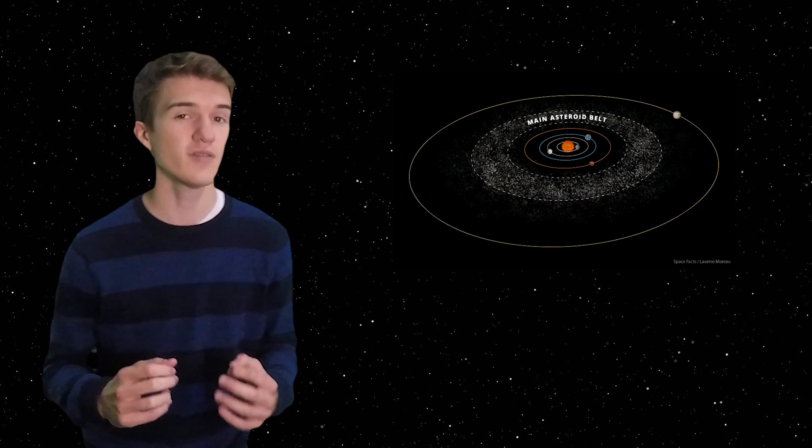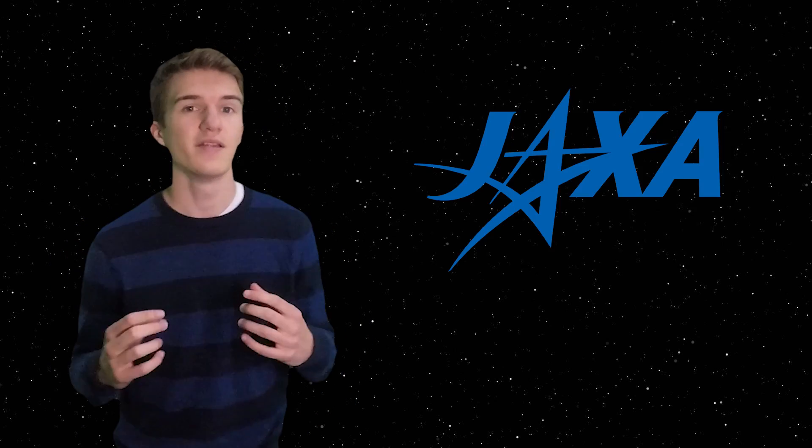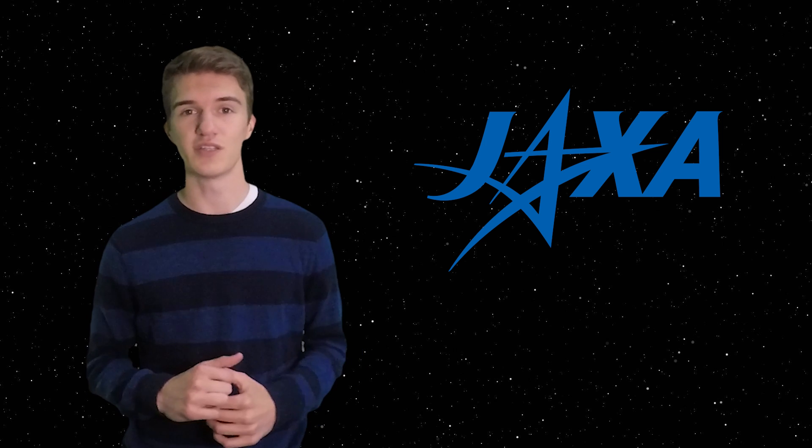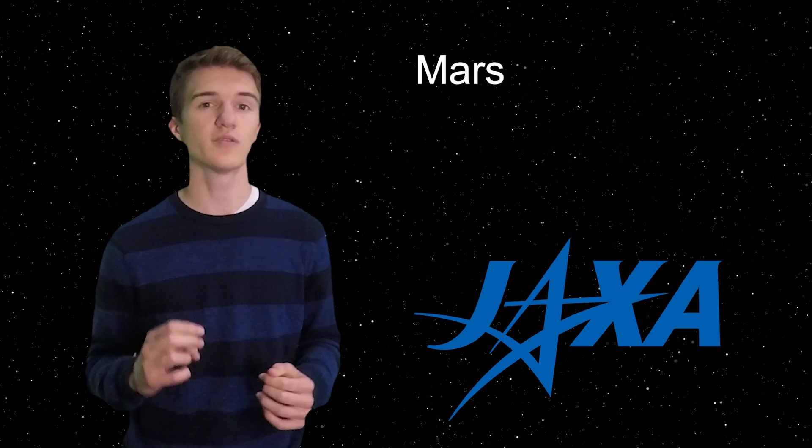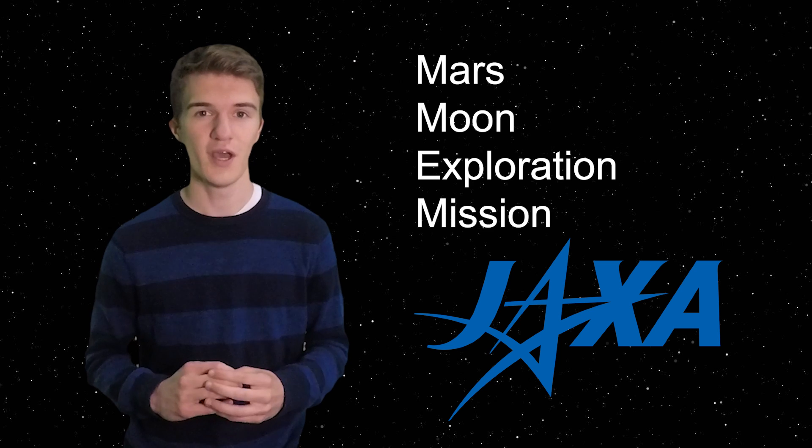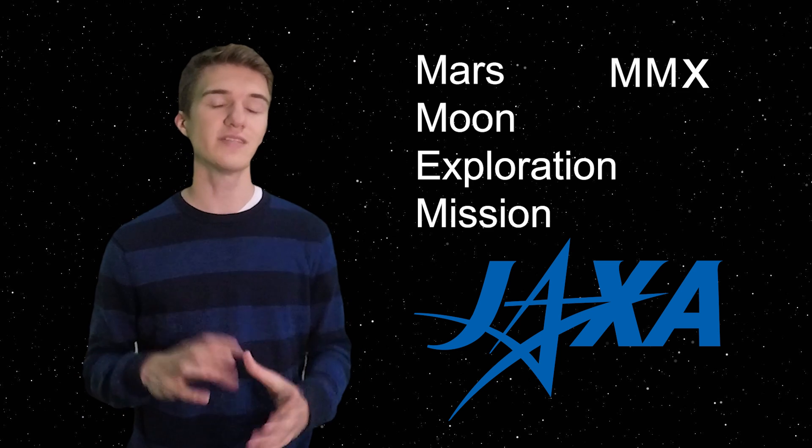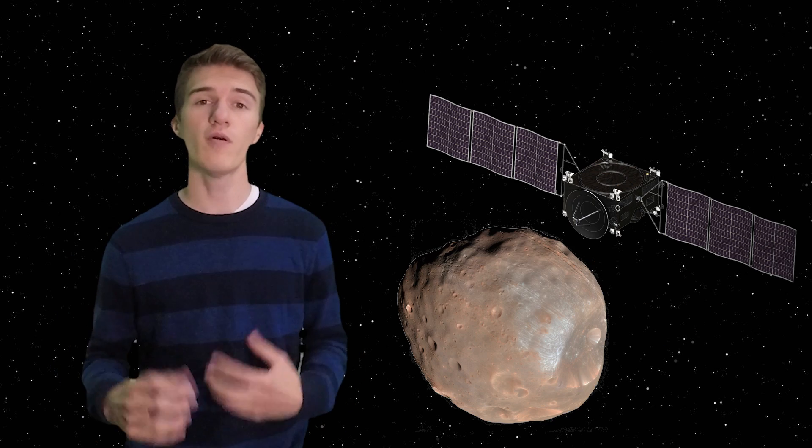Now, this is actually a mission that's coming up in the future. JAXA, or the Japanese Space Agency, is studying the Mars Moon Exploration Mission, which is also known as MMX, and this mission is going to orbit around both Phobos and Deimos,